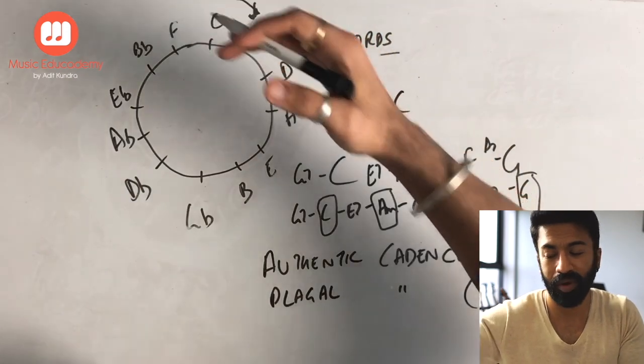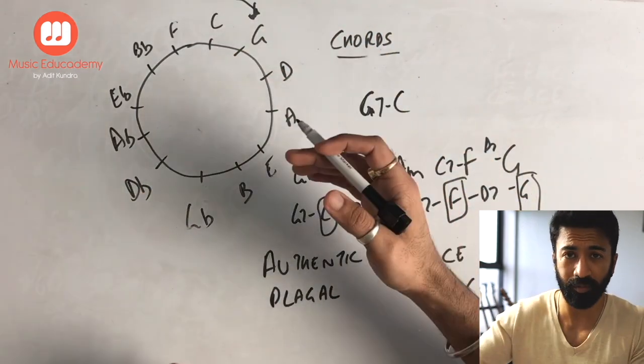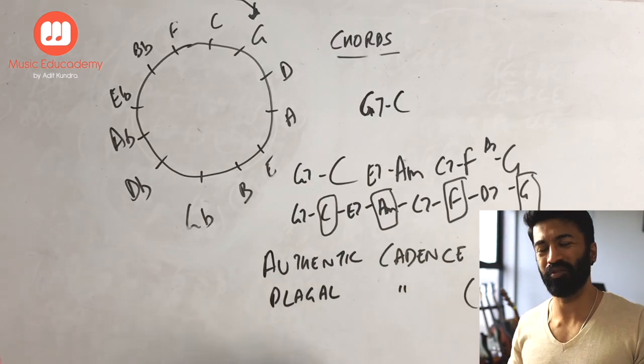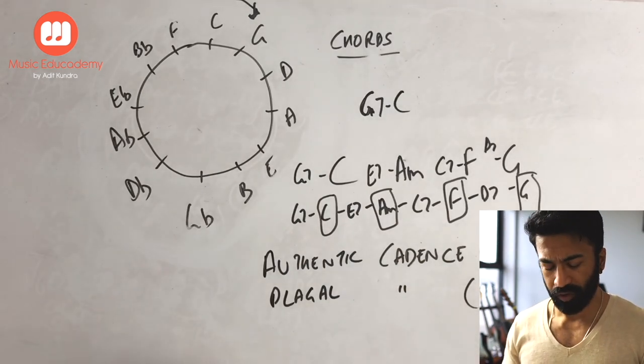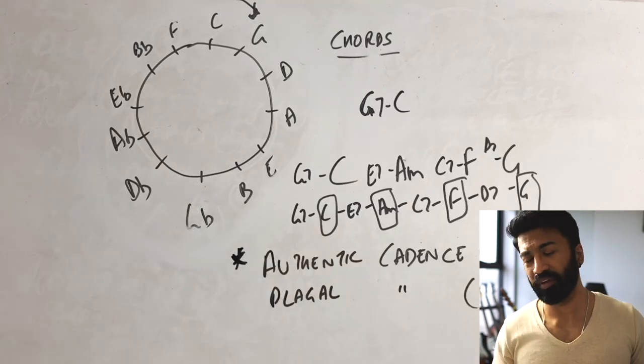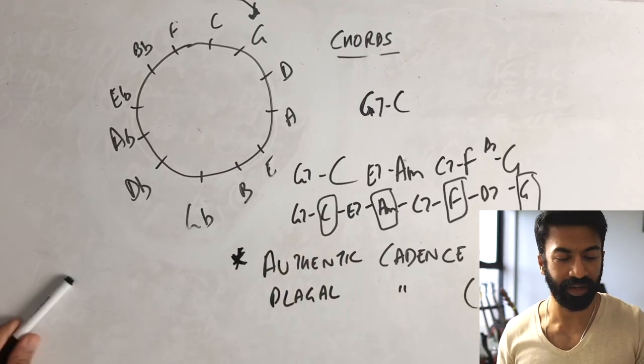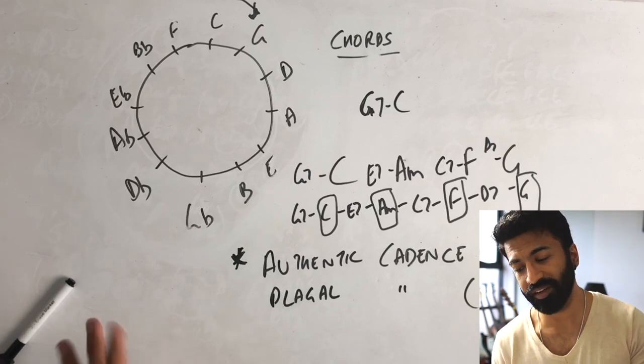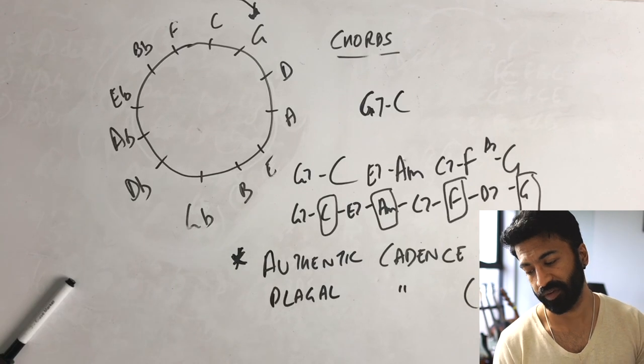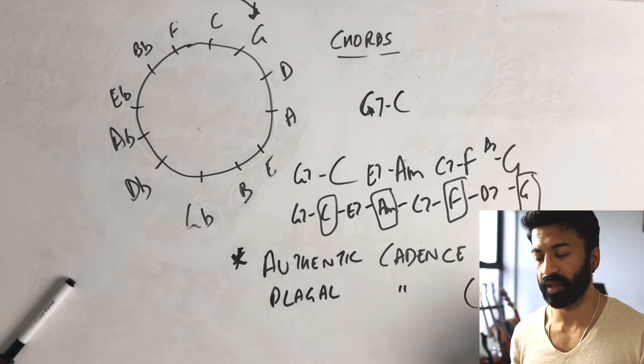So this movement is anticlockwise. That's called authentic cadence, which is very common. This movement is called a plagal cadence. This is also common, but it's not as common. So this is just a side note, tidbit, not really that important right now. But if you want to know it, why not? So that was the reason why I prefer to call it circle of fourths and not the circle of fifths. But you can call them both. Both are correct.